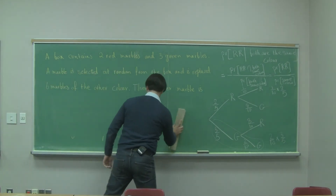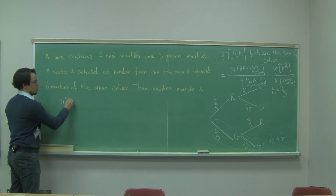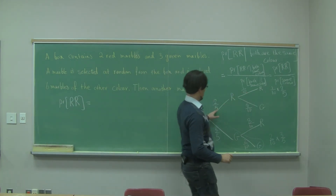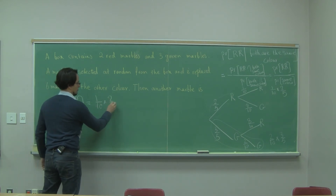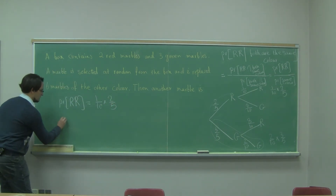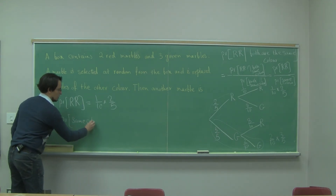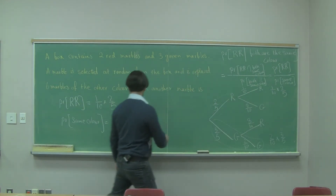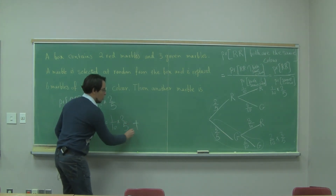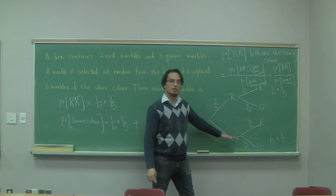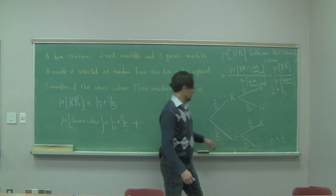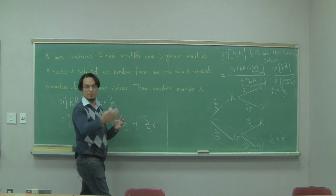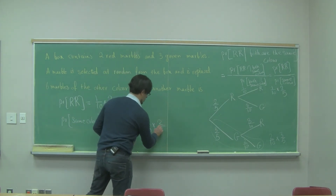So the probability that both are red is 1/10 × 2/5. The probability that both are the same color has two possibilities: either both are red, giving 1/10 × 2/5, or both are green, which follows the green-green path with probability 3/5 × 2/10.